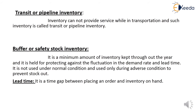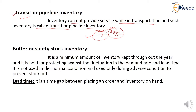What is transit or pipeline inventory? Those inventories which cannot provide a service while in transportation — such inventory is called transit or pipeline inventory. In other words, inventory that is in transportation and not yet in the organization is known as transit or pipeline inventory.